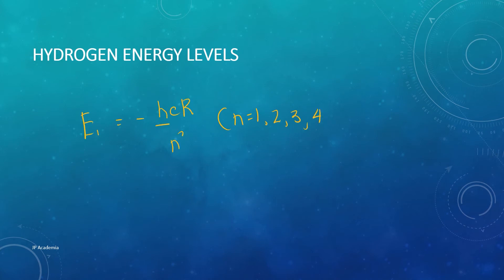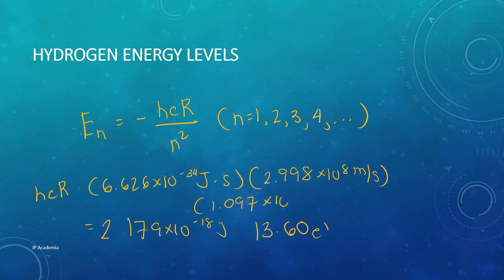The Balmer series and the other series we will discuss later suggest that the hydrogen atom has a series of energy levels. And these energy levels, En, can be expressed as this, where n is just an integer. Hcr here can be expressed numerically using the value of Planck's constant, the speed of light in a vacuum, then the Rydberg's constant. So we will have this final value in Joules, and this is the value in electron volts, 13.6.